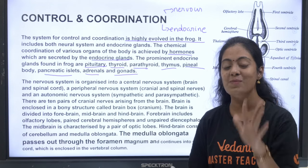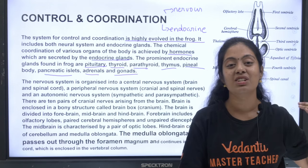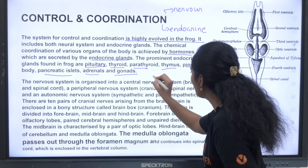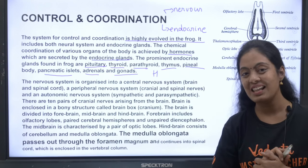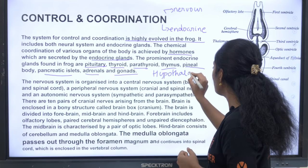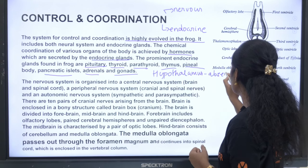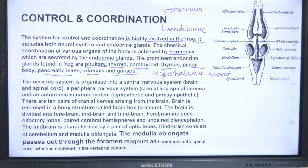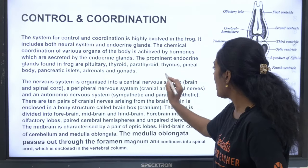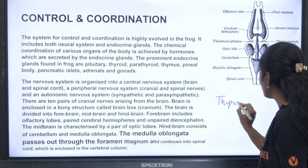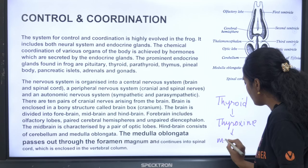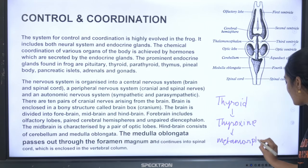The gland that is absent in frogs but present in mammals is the hypothalamus. The thyroid gland produces the hormone thyroxin, which is very important for metamorphosis.